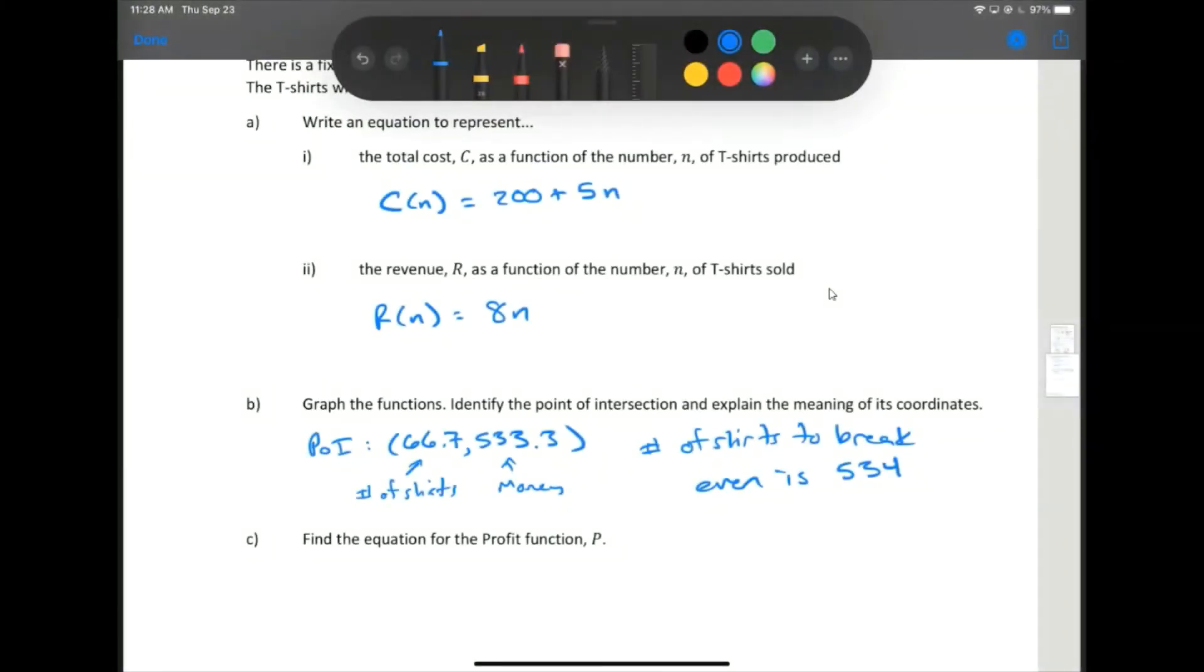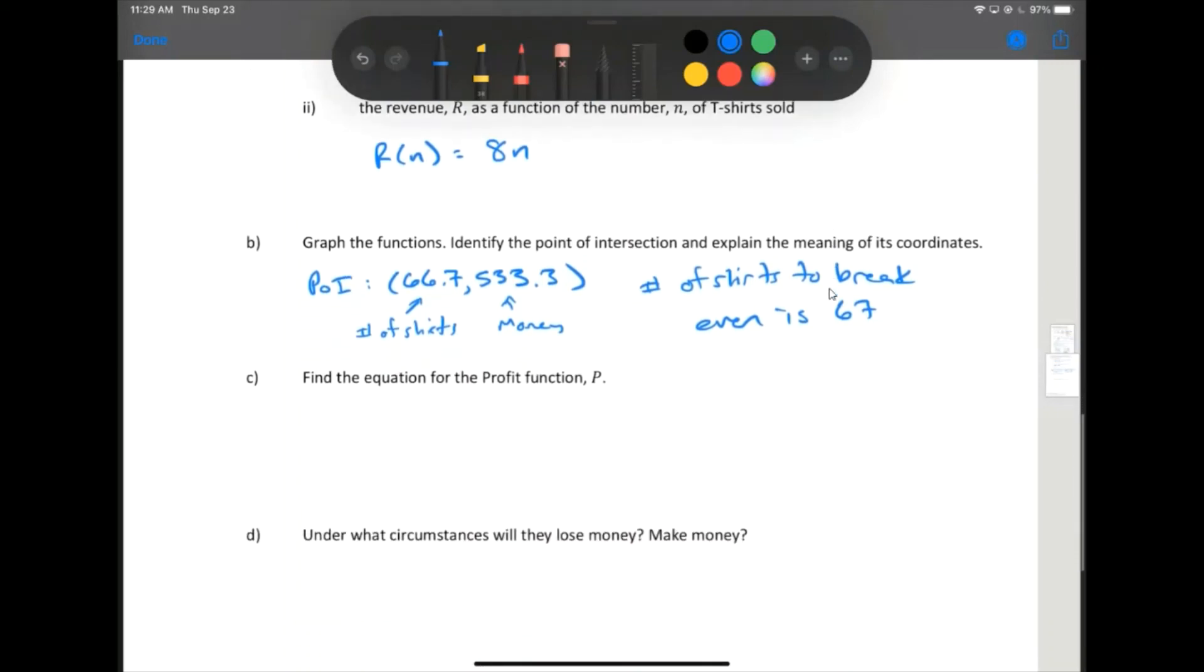You'll notice that for the break-even point, I have actually rounded up, and that's because they can't sell 66.7 shirts. The number of shirts is the first value, the 66.7, so we'll say that it's 67 shirts that they have to sell in order to break even. If they sell 66, they don't break even and they can't sell 66.7. But essentially, it's saying that if they make and sell 67 shirts, it will cost them about $533 to make them and make around $533 on the sales.